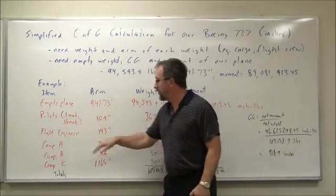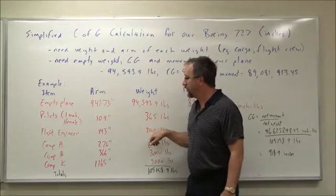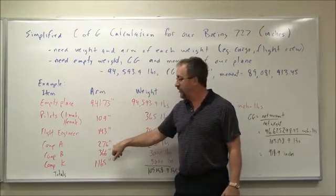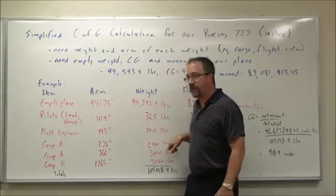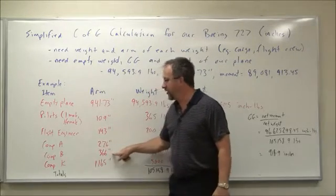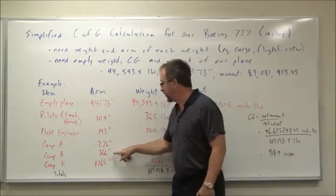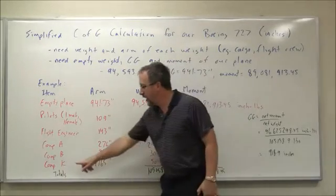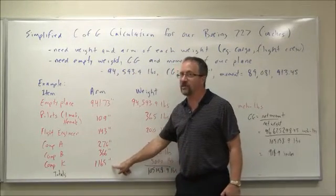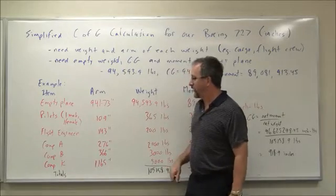Continuing on, a male flight engineer at 143 inches, 200 pounds. Compartment A we put at 276 inches, we put 2,000 pounds. Compartment B, which is at 366 inches from the datum, 3,000 pounds. Compartment K, which is at 1,165 inches from the datum, 5,000 pounds.